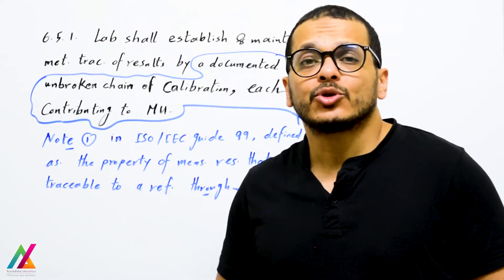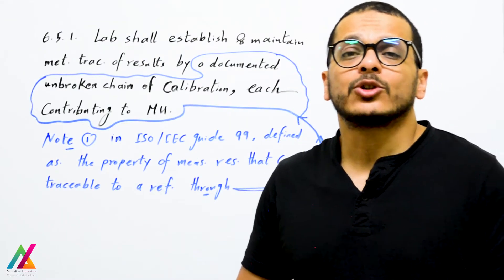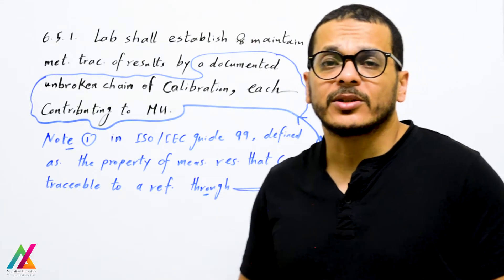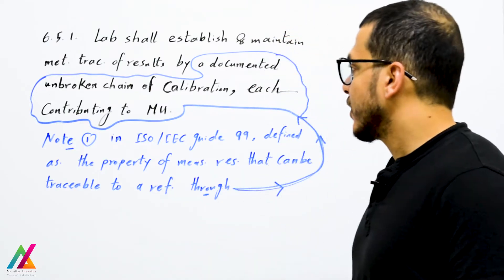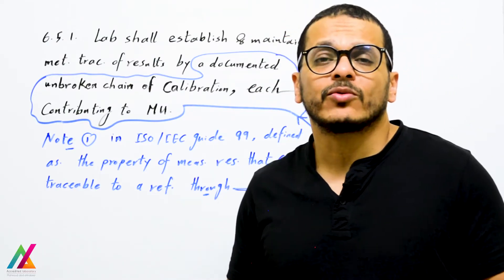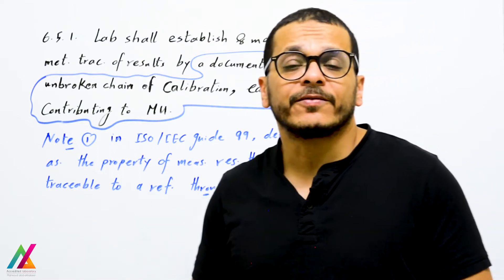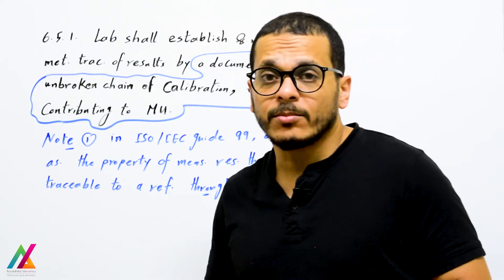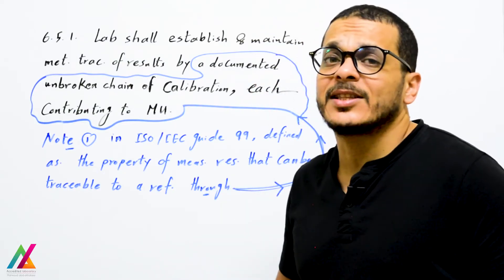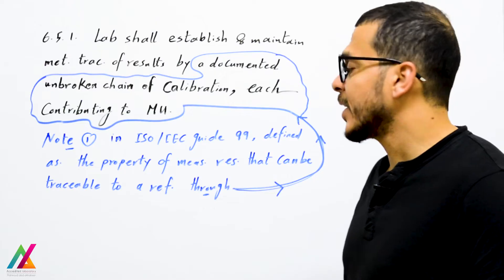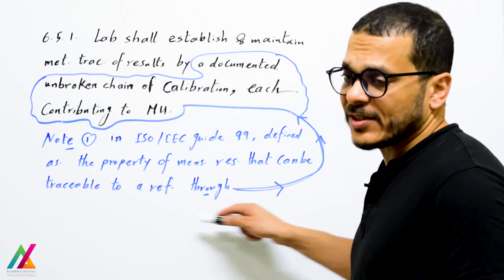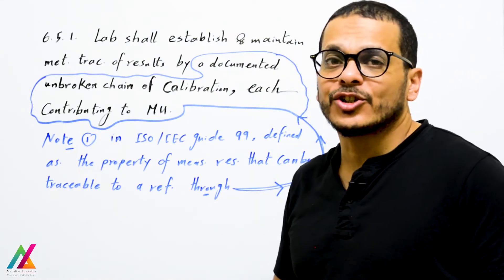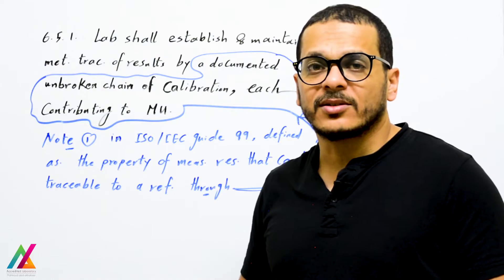The lab shall establish and maintain metrological traceability of results by a documented unbroken chain of calibration, each contributing to measurement uncertainty. This aligns with the definition in ISO/IEC Guide 99, which refers to the International Vocabulary of Metrology (VIM), defining metrological traceability as the property of a measurement result that can be traced to a reference through a documented unbroken chain of calibration, each contributing to measurement uncertainty.